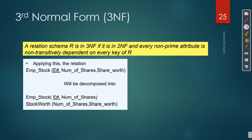So we decompose it. We separate these two. Employee ID and number of shares stay in one actor relation. And another relation has number of shares and share OD. So from one table we now get two separate tables. Employee ID and number of shares stay in the actor relation, while share OD goes into a separate relation with number of shares.